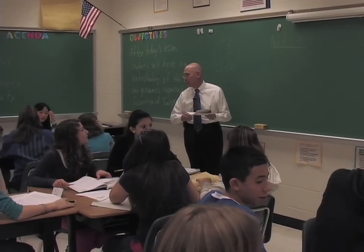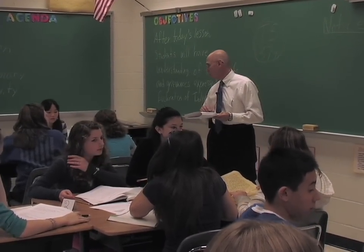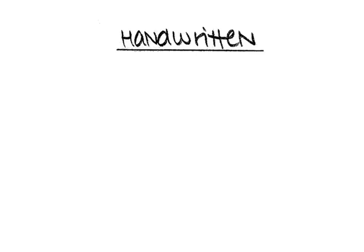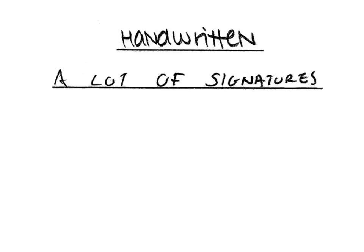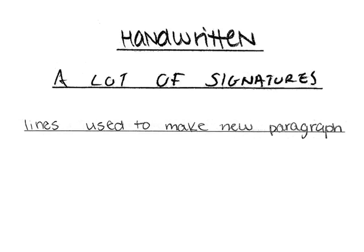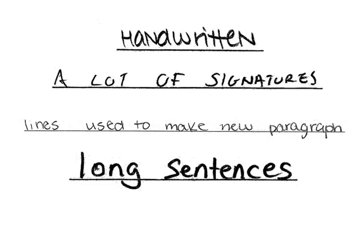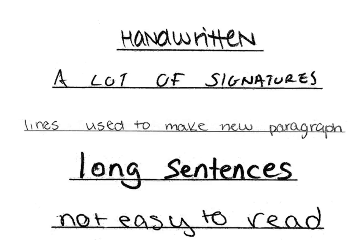Let's start over here with table three. What did we notice? That it was handwritten. Handwritten. What else did you notice? There's lots of signatures. We got signatures. What else? There's lines on there — lines between sentences or paragraphs perhaps. Anything else? Long sentences. What kind of words? Hard vocabulary.